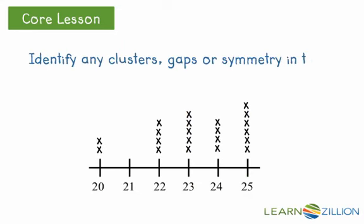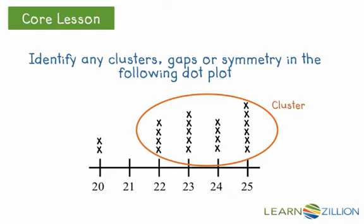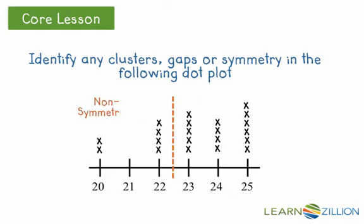So now that we know what we're looking for with our patterns, let's look at this dot plot and see if we can identify our patterns. So we have a gap between 20 and 22. We have a cluster between 22 and 25. And it is not symmetrical.